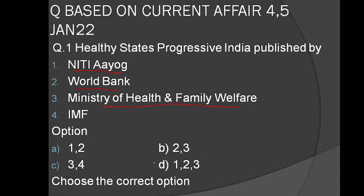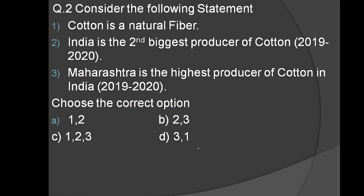Consider the following statements: Cotton is a natural fiber. India is the second biggest producer of cotton in 2019-2020. Maharashtra is the highest producer of cotton in India. The options are: one-two, two-three, one-two-three, and three-one.